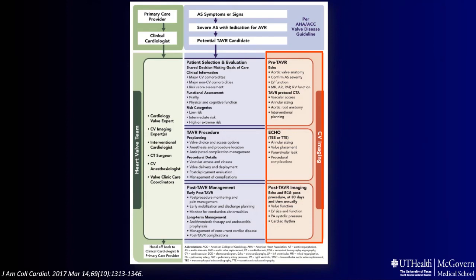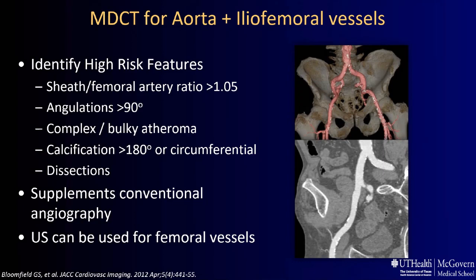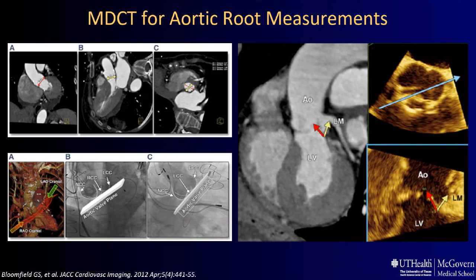Although this is an echo talk, we must mention the crucial role of CT in pre-TAVR evaluation. Multimodality imaging is very important. CT is first used to evaluate the aorta and iliofemoral vessels — assessing tortuosity and calcification to decide the best access route. Cardiac CT is also the primary method to assess annular dimensions, perimeter area, sinus of Valsalva width, sinotubular junction, aorta width, and coronary artery height to choose the best prosthesis for each patient.